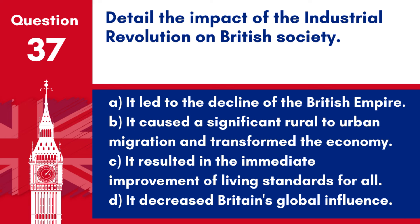Question 37. Detail the impact of the Industrial Revolution on British society. a. It led to the decline of the British Empire. b. It caused a significant rural to urban migration and transformed the economy. c. It resulted in the immediate improvement of living standards for all. d. It decreased Britain's global influence. Answer: b. The Industrial Revolution had a profound impact on British society, leading to major urbanisation, changes in employment, and the transformation of the British economy from agricultural to industrial.